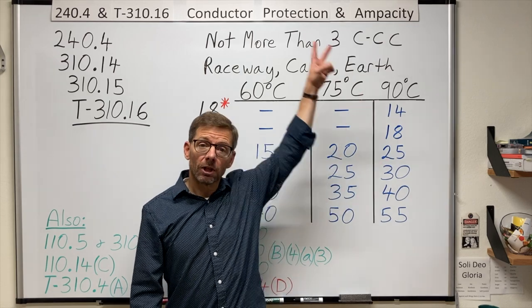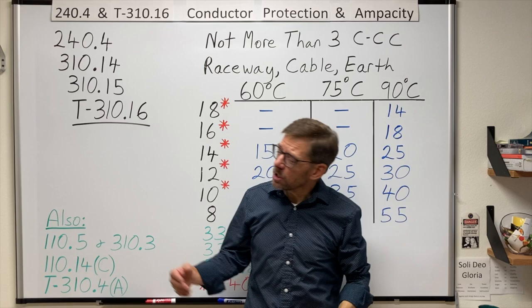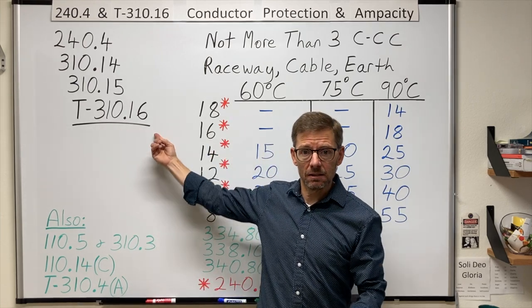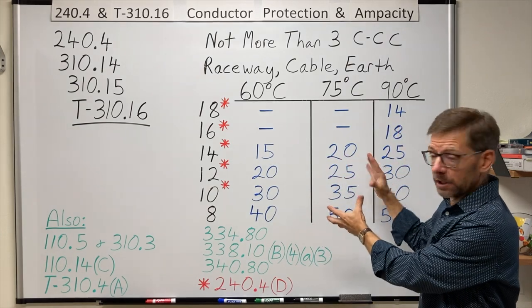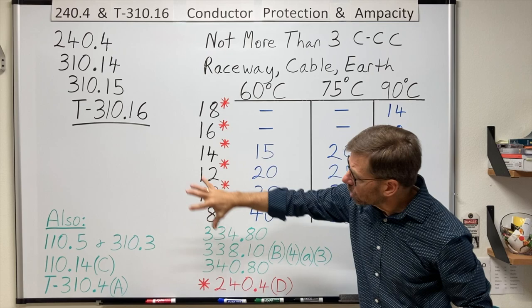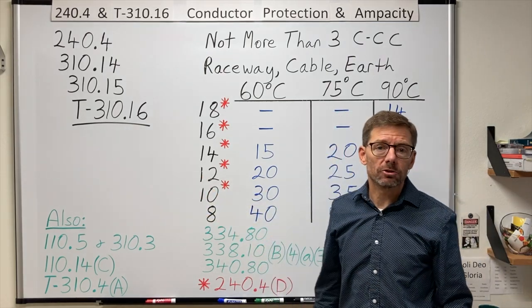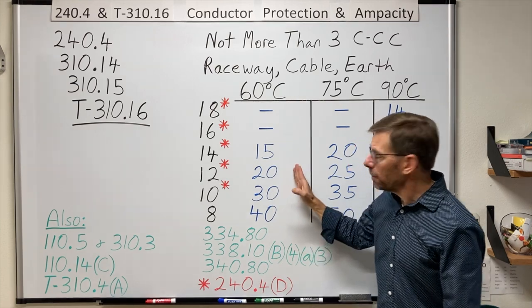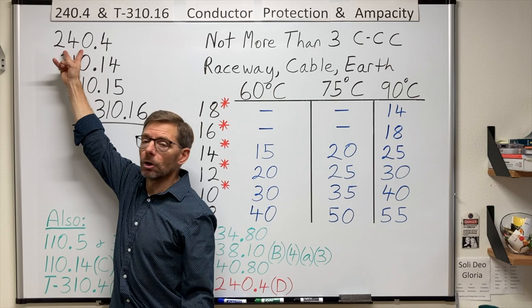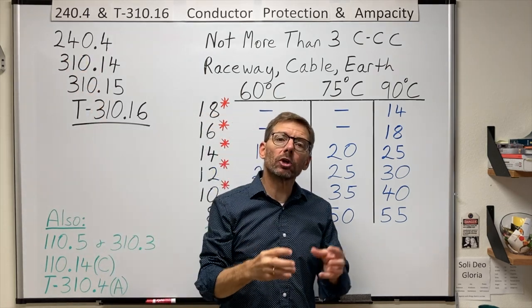In this video, we're looking at conductor protection and ampacities, largely by considering Table 310.16, a portion of which I have drawn here, just the upper left-hand corner, and some other code sections all from the 2020 National Electrical Code. But before I look at the table, let's begin back in Article 240, which is all about overcurrent protection.